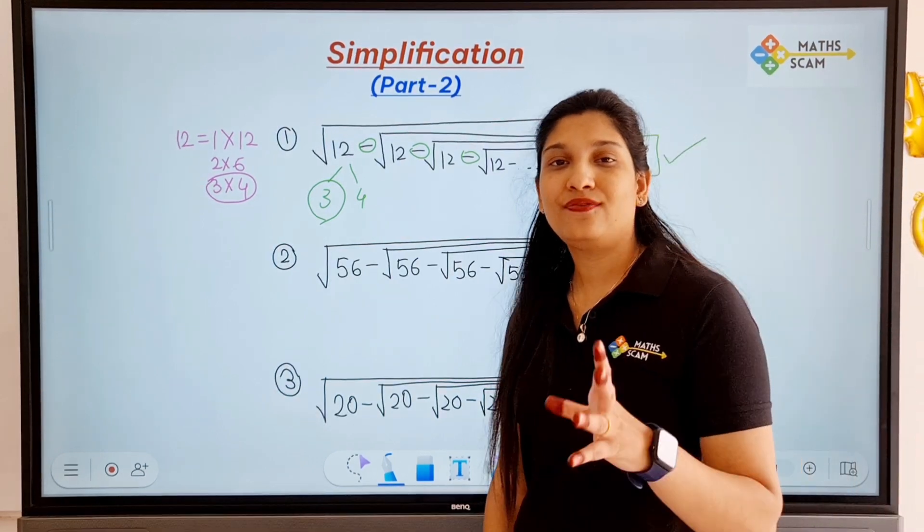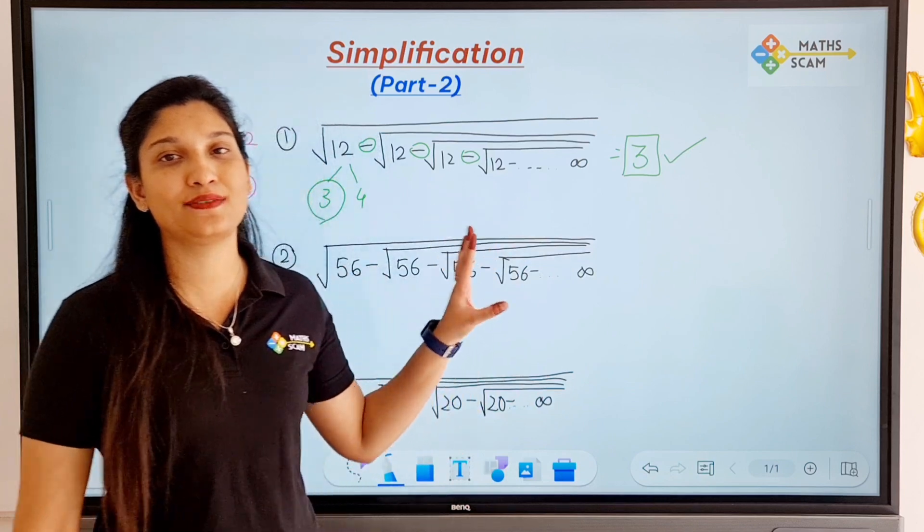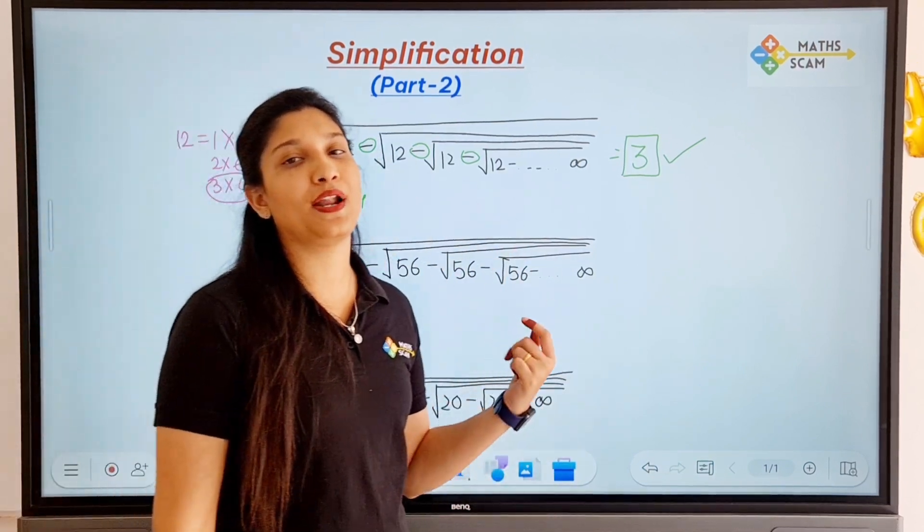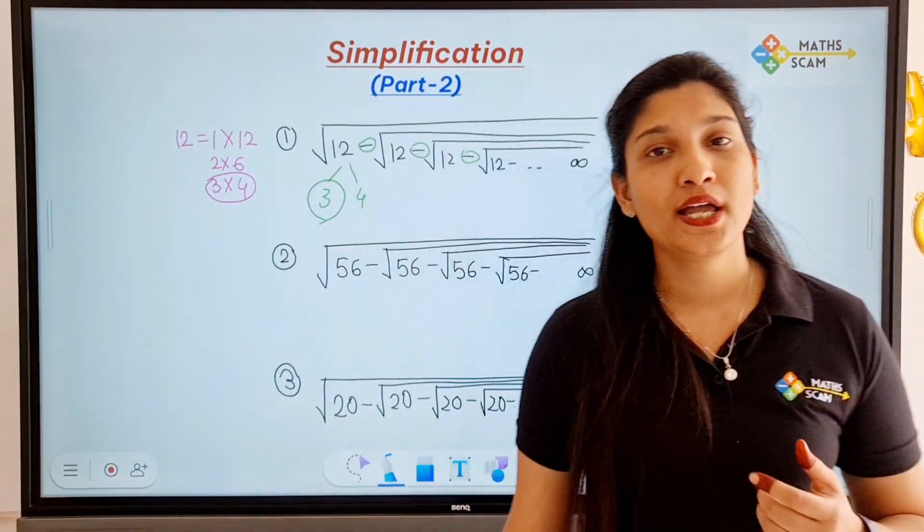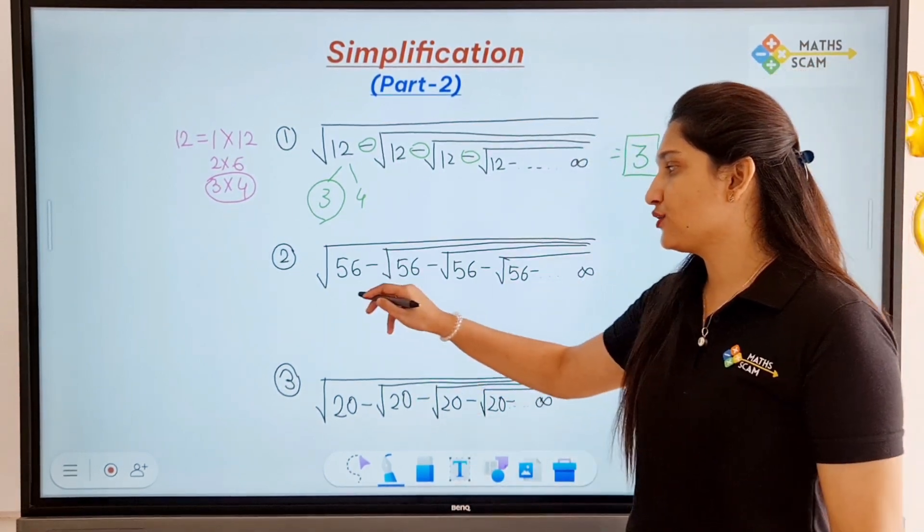If it was addition, the first part, the addition, then we would have chosen the greatest factor. But here it's subtraction, so we are going to choose the smallest factor.